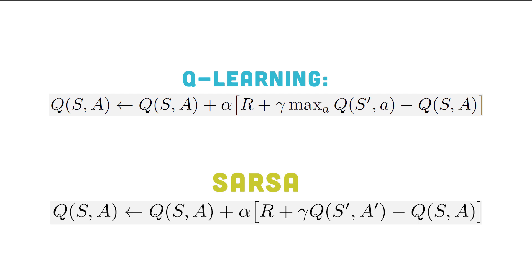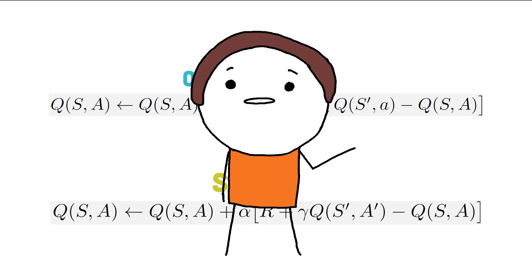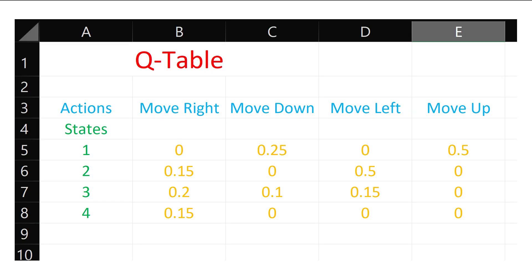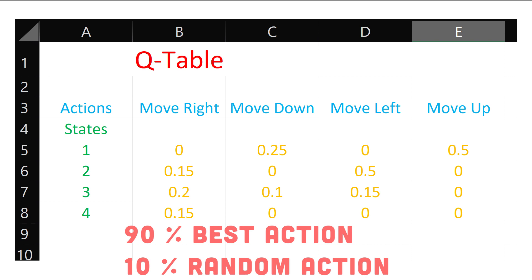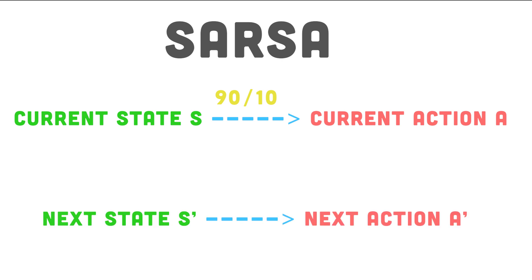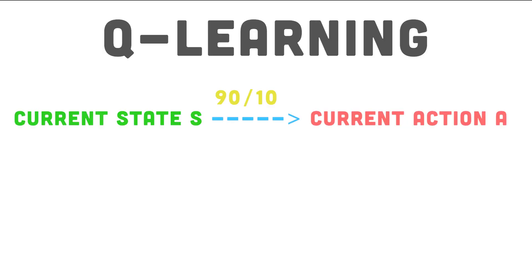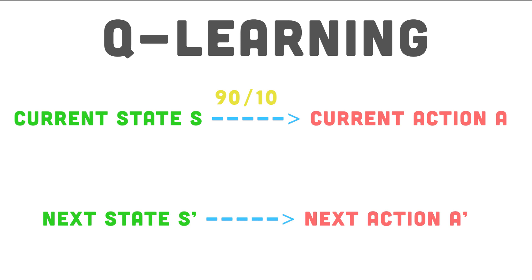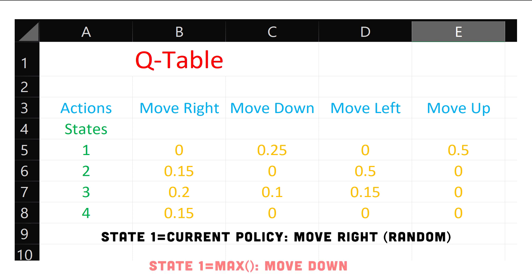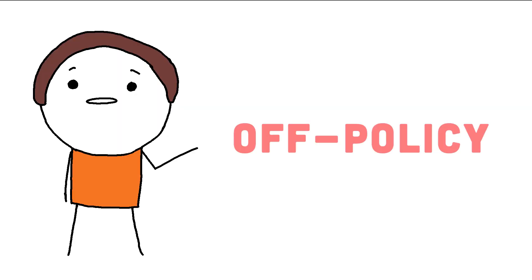Let's look at the update rule of SARSA to see how it differs from Q-learning. Both formulas are quite similar, but there is a key distinction in the Temporal Target part. In SARSA, the next action is chosen by your current policy — for example, your policy could be to take the best action 90% of the time and choose a random action for the remaining 10%. So your current action A for state S is chosen that way, and the next action A' for the next state S' is chosen the same way — all part of your agent's current policy. It's on the policy, so it's called an on-policy algorithm. But that's not the case for Q-learning. While your current action A might be chosen in the same 90-10 fashion, the next action A' for the next state S' is chosen with the max function. Your 90-10 policy might have produced a random action, but the max part will pick a different action — different from what your agent's current policy would have picked. It's off from your current policy, therefore it's called an off-policy algorithm.